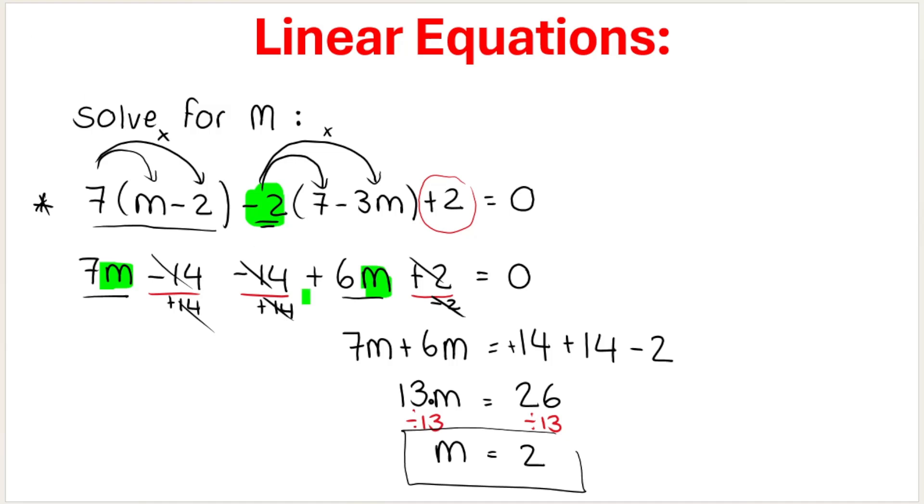And if you take your answer of 2, so you substitute 2 in the place of m and you work it out. You can use your calculator. Type it in properly. You will see that the left-hand side of the equation will be 0, which is equal to the right-hand side of the equation. So we've solved correctly.